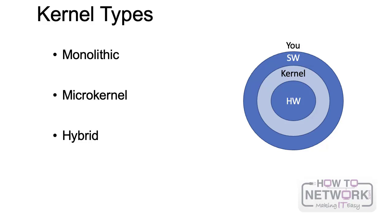In a micro kernel, it's exactly the opposite. The kernel has only the very basic instructions - the very basic lines of code needed to load that kernel. All the other device drivers, all the other instructions that allow the kernel to communicate with hardware components, are loaded separately. You have a very small kernel and then a set of files that are loaded as they are required.